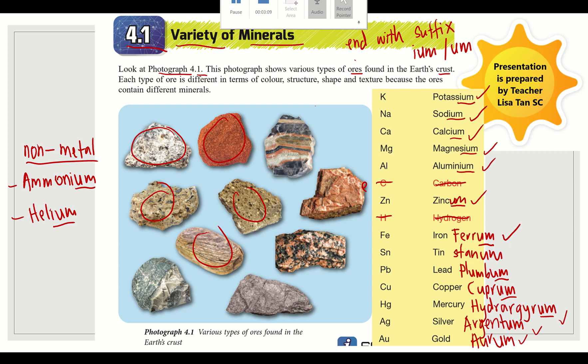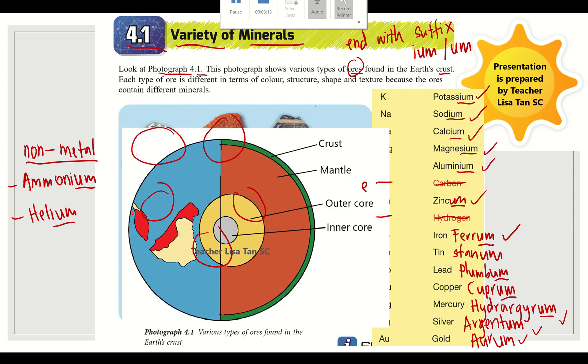Minerals can be found in earth crust. So where is the earth crust? What does mean crust? Crust means the outermost layer of a planet. If I say earth crust means the outermost layer of earth. Minerals can be found in the earth crust.